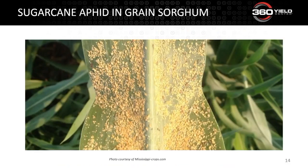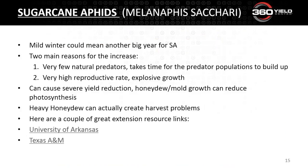Jumping over to sugarcane aphid and grain sorghum — this is beginning to emerge as a topic of great interest in the southern U.S. where they are growing grain sorghum. We had a mild winter in many areas and the sugarcane aphid has begun to build its populations up. The sugarcane aphid was not that common in grain sorghum until about 2013 when they started to discover it moving over into grain sorghum. One reason for the growth is that as a new insect builds up its populations, there are very few natural predators — it takes a while for the predator population to build up, and there's a lag time of months or even years.